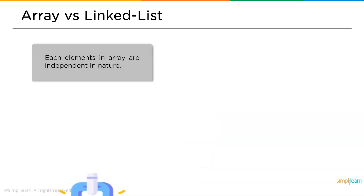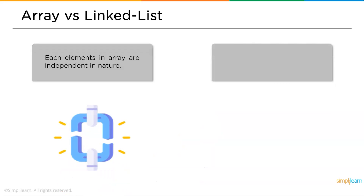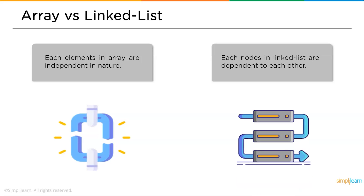The next difference is that each element in an array is independent — you can access any element simply by giving its index location. Whereas in a linked list, the elements are interdependent on each other; to access a specific element, you need to traverse through the other elements.